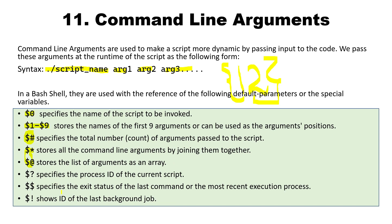Apart from that, you can use some other default parameters like $? which specifies the process ID of the current script, then $$ which specifies the exit status of the last command or the most recent execution process, or $! which shows the ID of the last background job. So that's all for this topic — command line arguments.